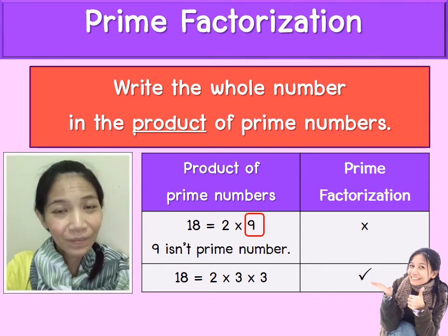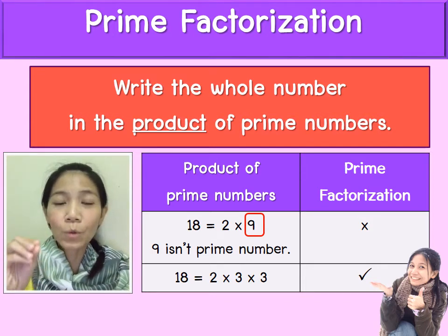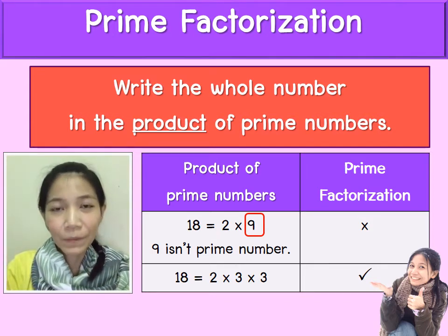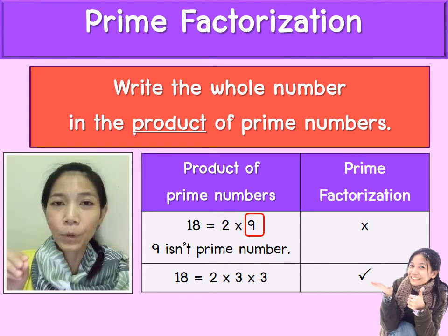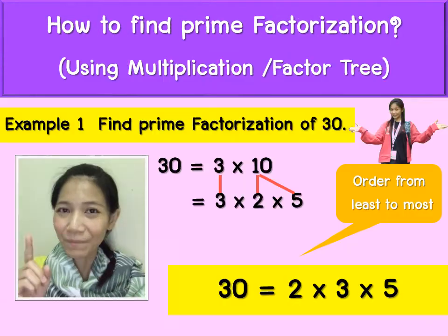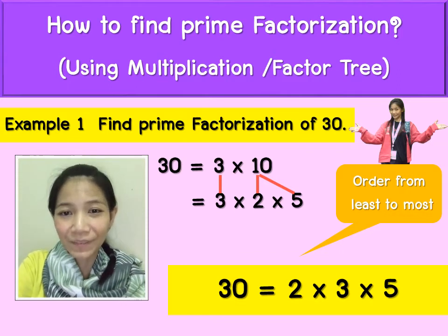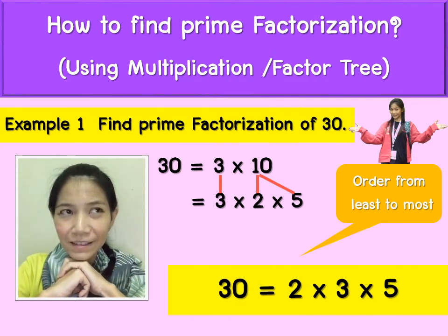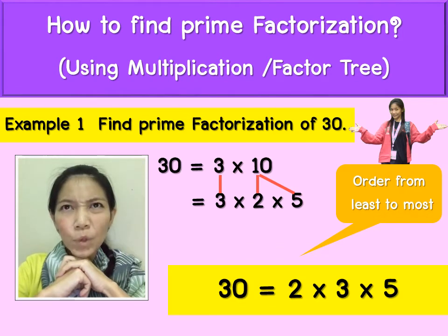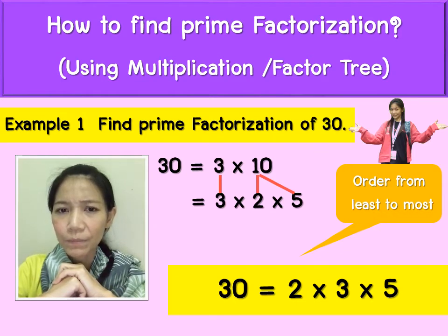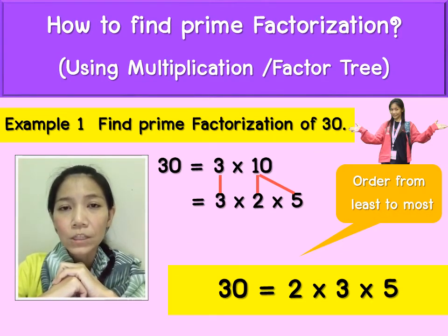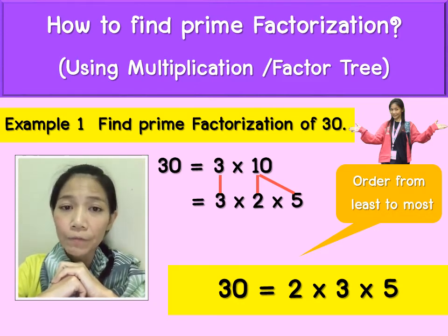Understand? When you want to write in factorization, you write it as the product of prime numbers. Example 1: prime factorization of 30. You start from 3 times 10. 30 equals 3 times 10 — but you can't stop, because 10 can be broken down further. So it equals 3 times 2 times 5.